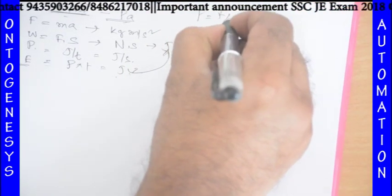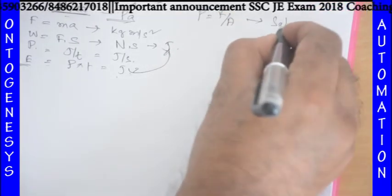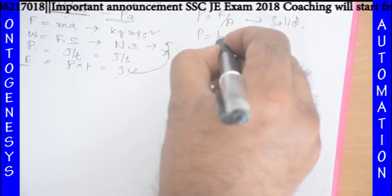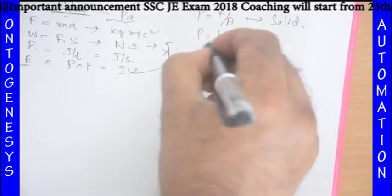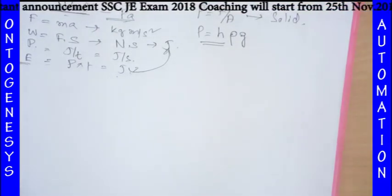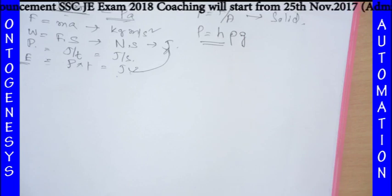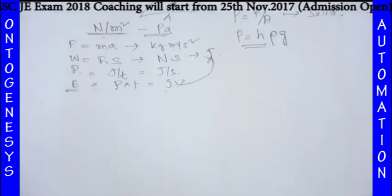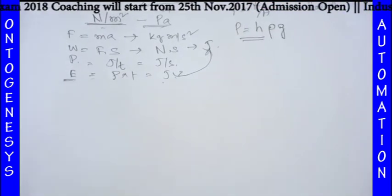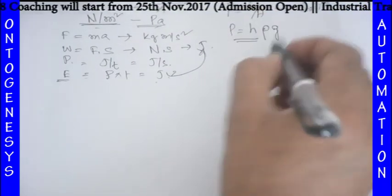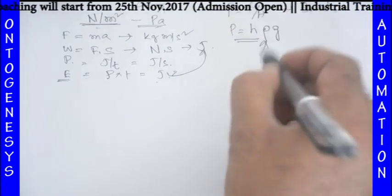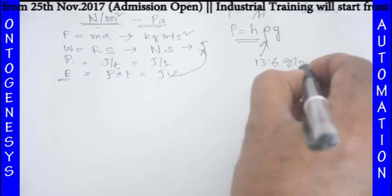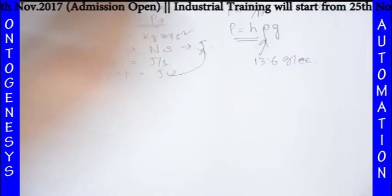Pressure can be given by P = F/A — this is for solids. For liquids, pressure can be given by h·ρ·g, where h is height, ρ is your density, and g is acceleration due to gravity. The density of mercury is 13.6 gram per cc (centimeter cube).